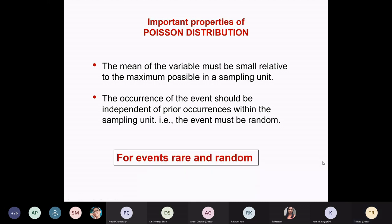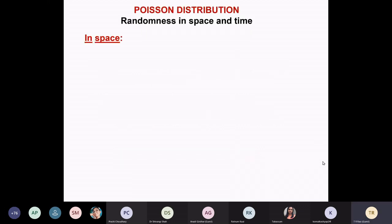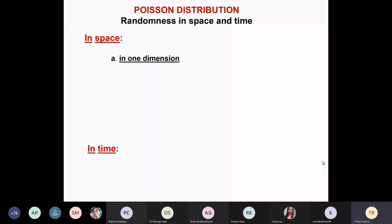From this, we use Poisson for events that are rare and random. Randomness can occur in space and in time. In space, it could be in one dimension. I ask my students: can you think of some situation where in one dimension you see Poisson or random distribution? It's not easy to come up with something.